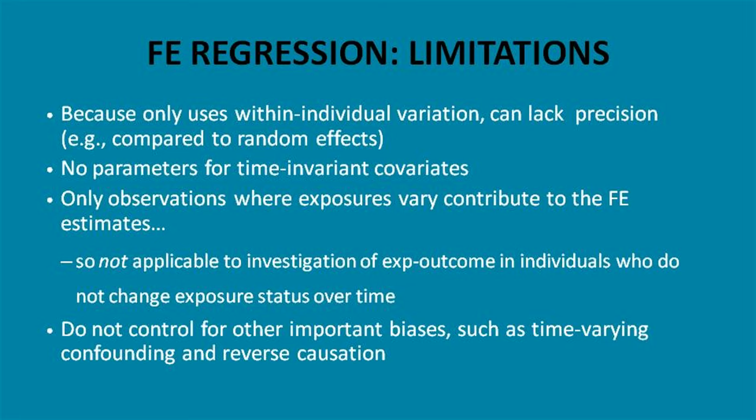Of course, fixed effects regression has limitations because it only uses within-individual variation. You can have small numbers and lack precision. There are no parameter estimates for time-invariant confounders. Only where changes in exposure occur does that contribute to the beta coefficients — so change in exposure is critical. If you want to look at somebody who stays in high job control, what effect does that have on mental health — this isn't your method. Changes or differences in job control, this you can use. And of course there's the usual problems: time-varying confounding, life events, reverse causation. This doesn't fix any of that.